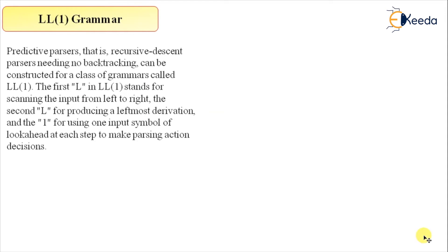Hi everyone, so the next topic among this predictive parser is LL1. And we have summarized this LL1 thing as a predictive parser that is a recursive descent parser with no backtracking can be constructed for a class of grammar. Now this is the new term and notice here that class of grammar called LL1.